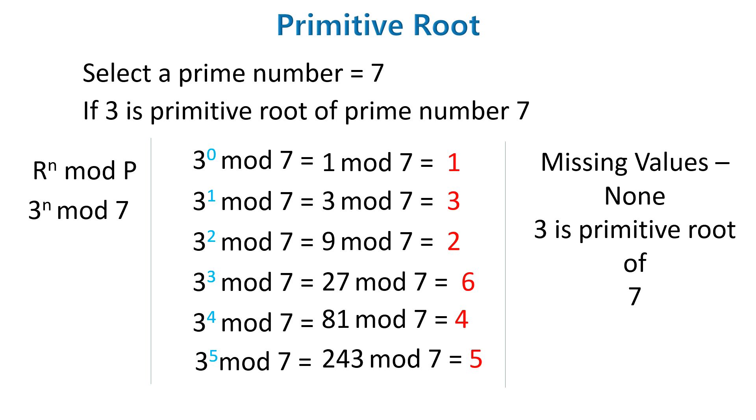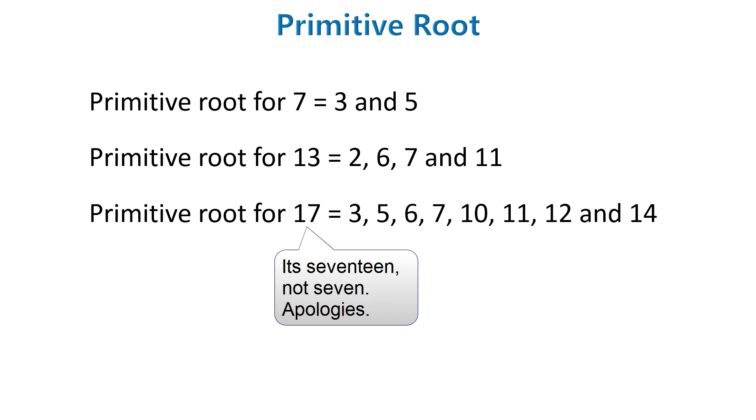We can have many primitive roots of a single prime number. For example, 7 has a primitive root 3 and 5. 13 has primitive roots which are 2, 6, 7 and 11. 17 has 8 primitive roots and those are 3, 5, 6, 7, 10, 11, 12 and 14.